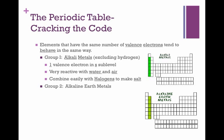Group 2 elements are called the alkaline earth metals. These metals are actually really similar to the alkali metals in the way they react with other elements, except that they have two valence electrons in the s sublevel. They are also reactive with air and water, and they will also combine with halogens to make salt.